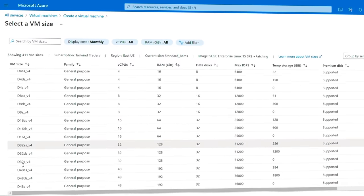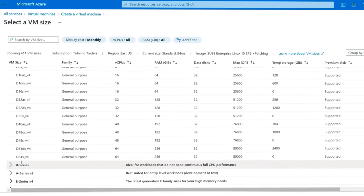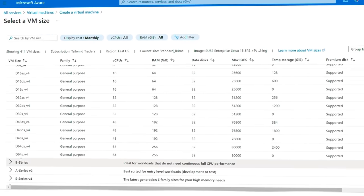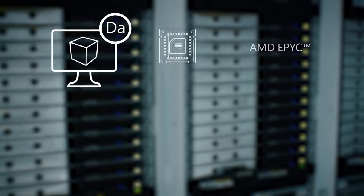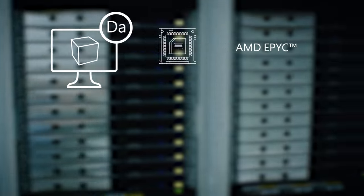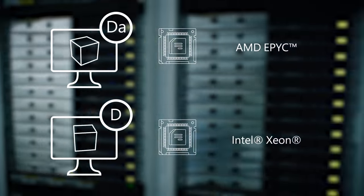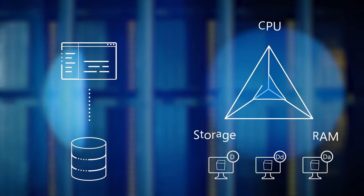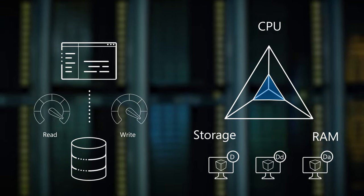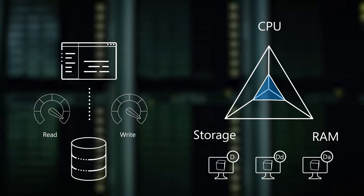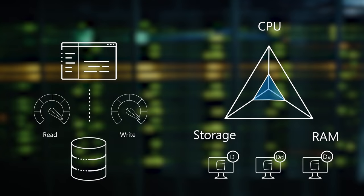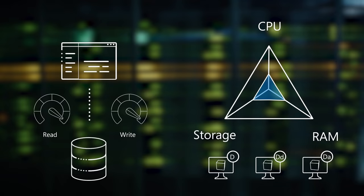These VMs offer the vCPUs, memory, and temporary storage to meet the requirements of most production workloads. There are a few options with the latest chipsets from AMD and Intel. The DA series use AMD EPYC processors and the D series run on Intel Xeon processors. The new VM sizes include fast, larger local SSD storage and are designed for applications that benefit from low latency, high-speed local storage, such as applications that require fast reads and writes to temporary storage.